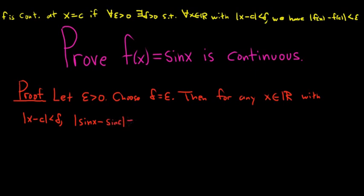And now here's the trick. There's a trig identity, right? So this is equal to absolute value 2 cosine of (x plus c over 2) sine of (x minus c over 2). So you have an absolute value here around the cosine and sine.